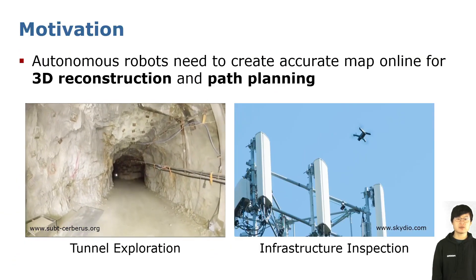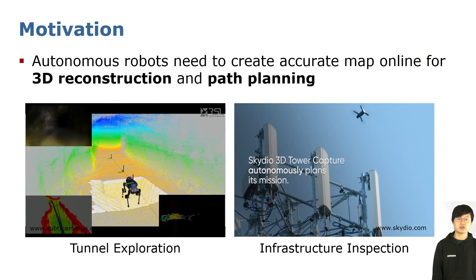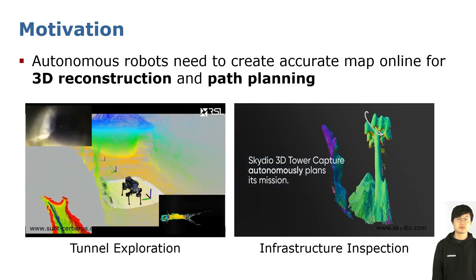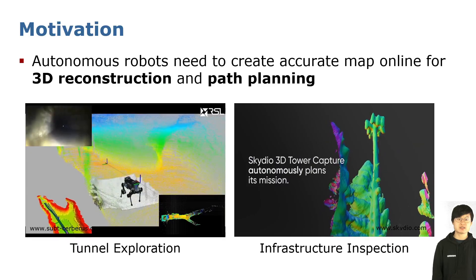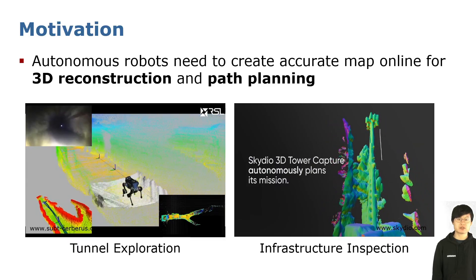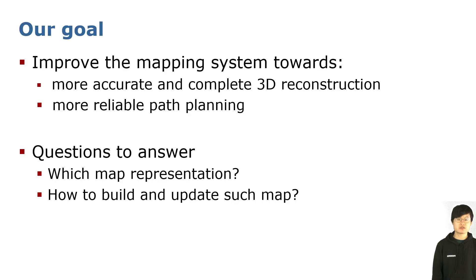Fully autonomous robots need to create accurate maps online for scene reconstruction and path planning. These robots can be used for tasks like tunnel exploration and infrastructure inspection. The goal of this research is to improve the mapping system for better reconstruction and more reliable path planning. To this end, we need to answer the following questions: which map representation shall we use, and how can we build and update such a map?